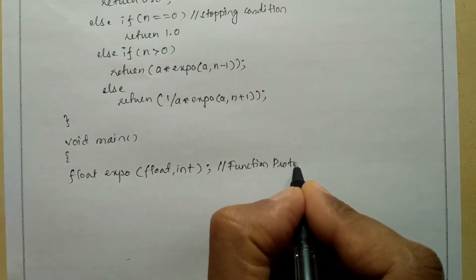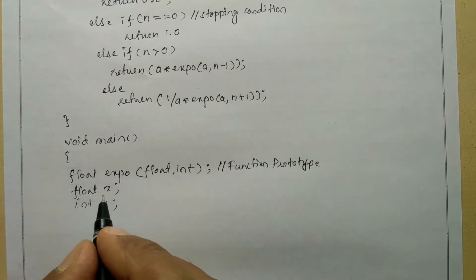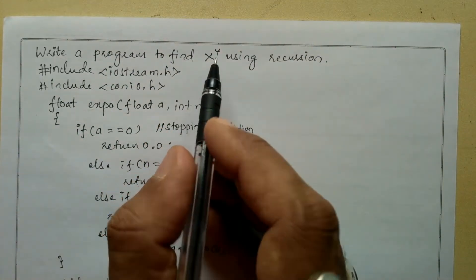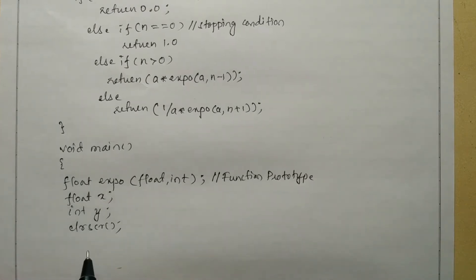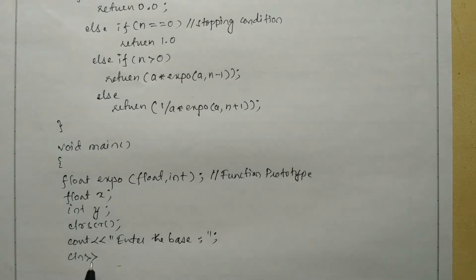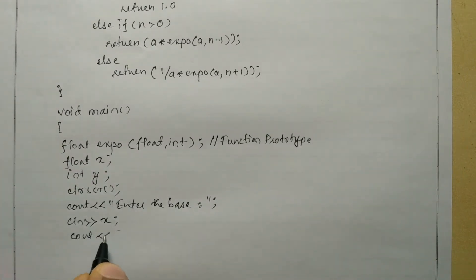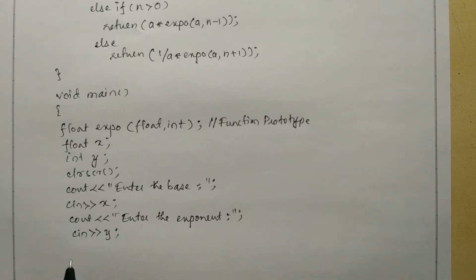In a single-line comment I'll note this is a function prototype. Next I declare local variables: float x and int y, because I want to perform x to the power y. Then I call clrscr() to clear the screen. Using cout I ask the user to enter the base, and receive the input into x using cin. Similarly I ask the user to enter the exponent and receive it into y.